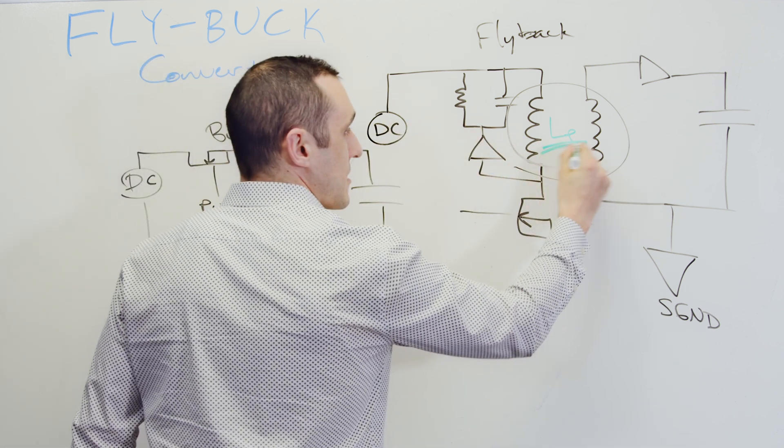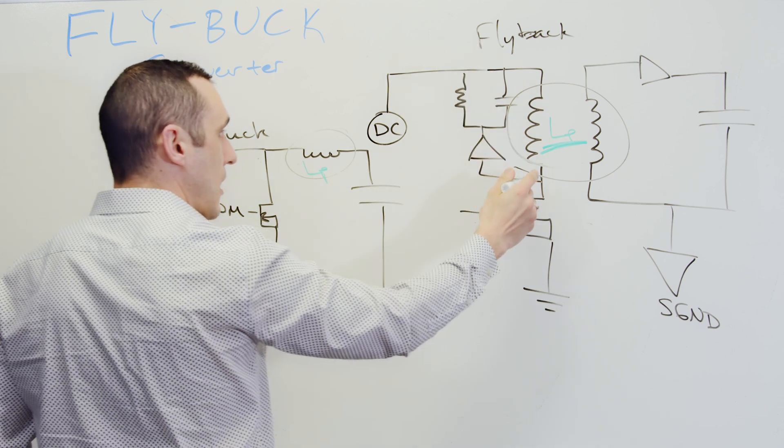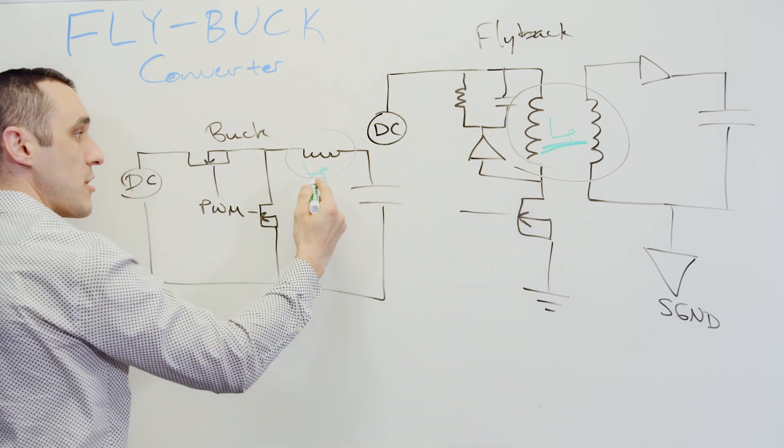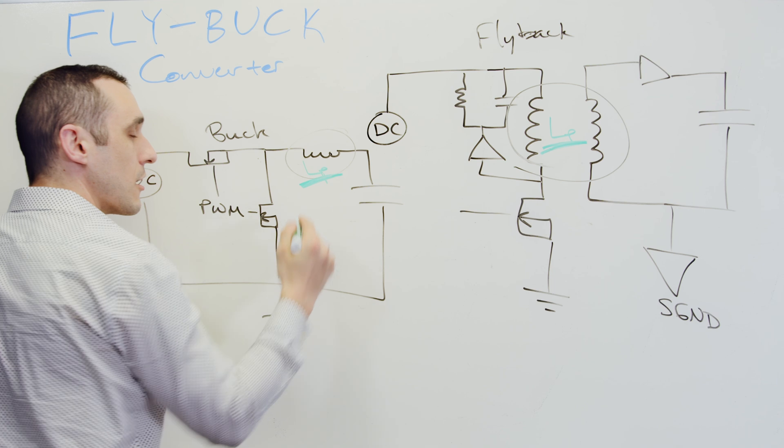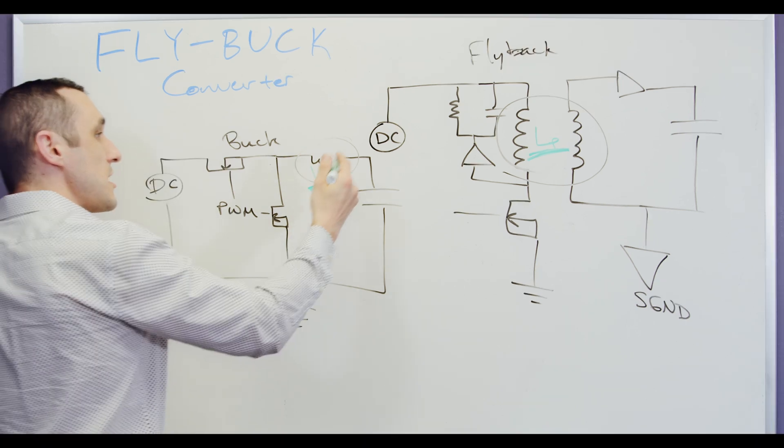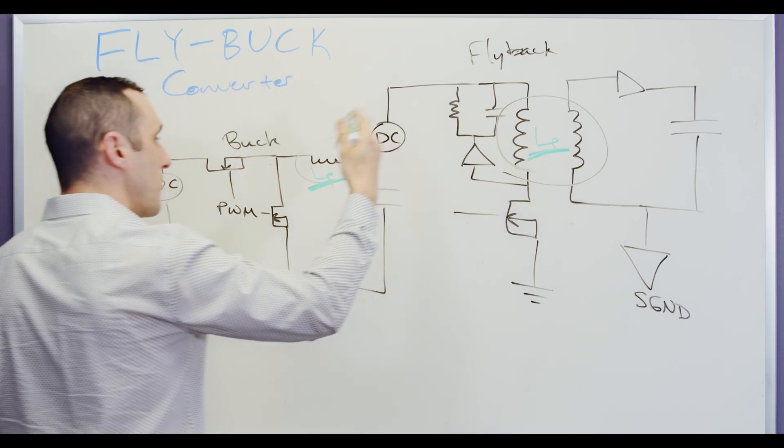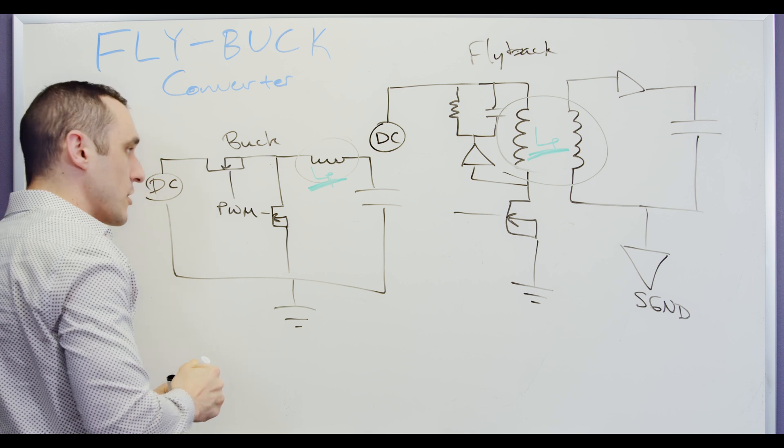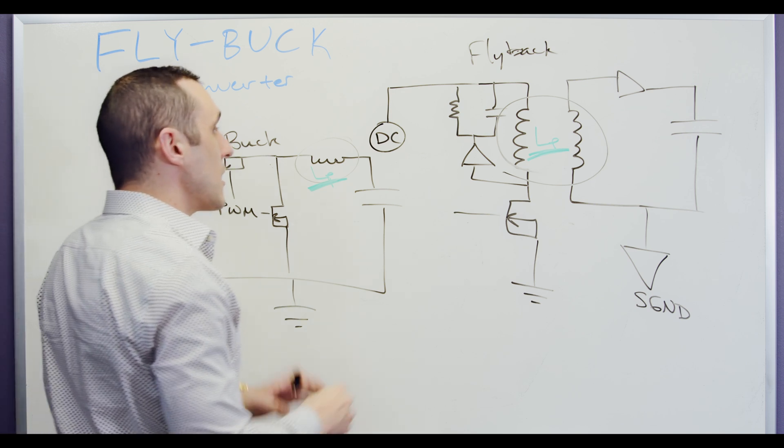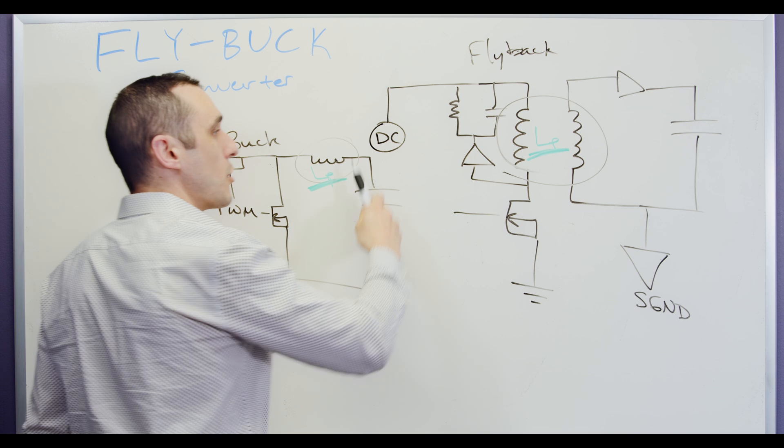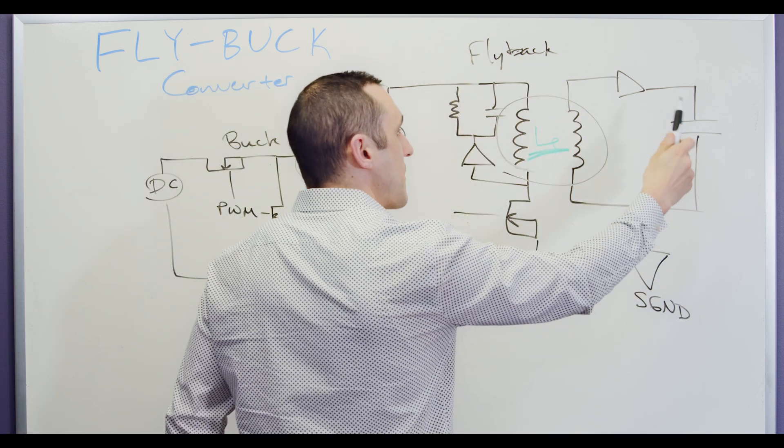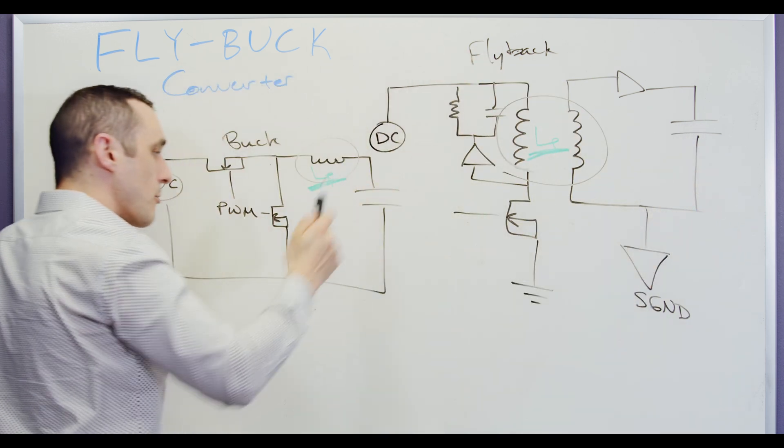So here the inductance that we would use normally in the flyback converter is then also exploited as the inductance here in our buck converter. Using a transformer in the buck converter gives us a totally different topology, and we can then couple another pulse over to an output side and have a secondary rail in our buck converter.